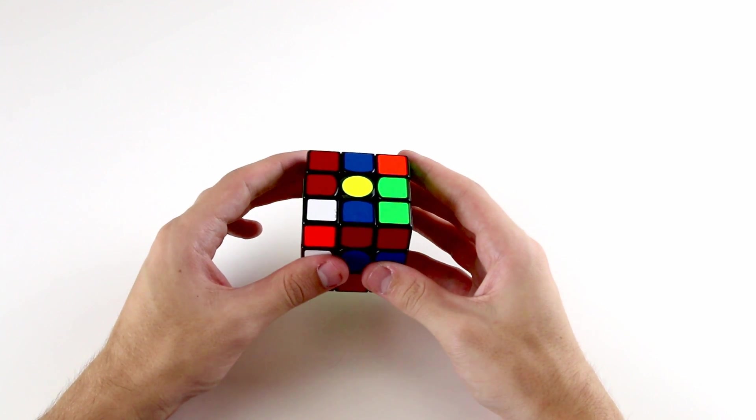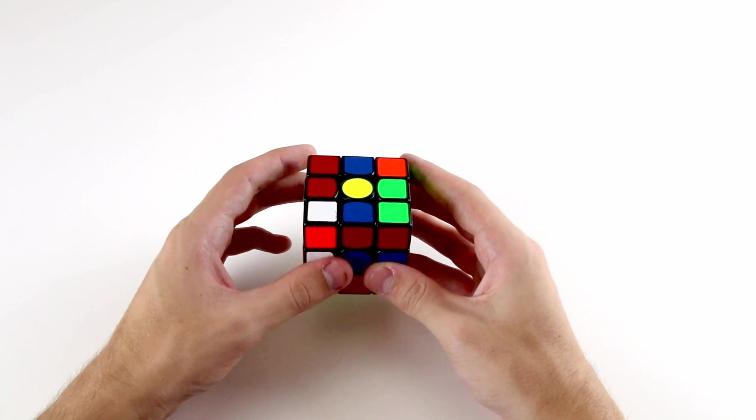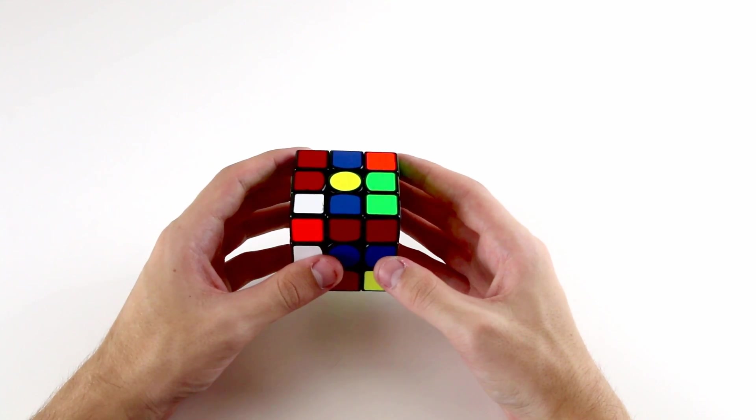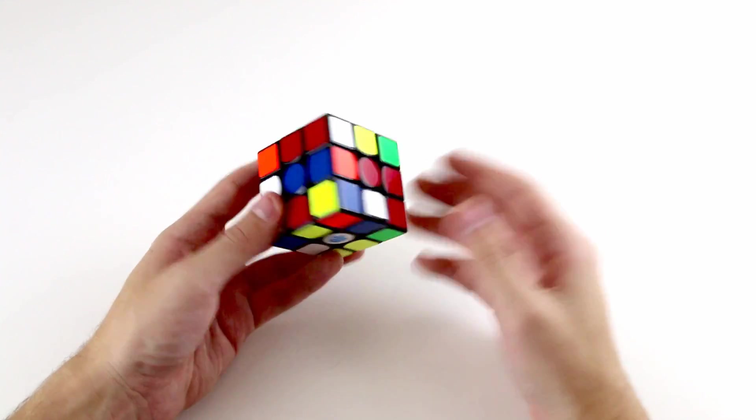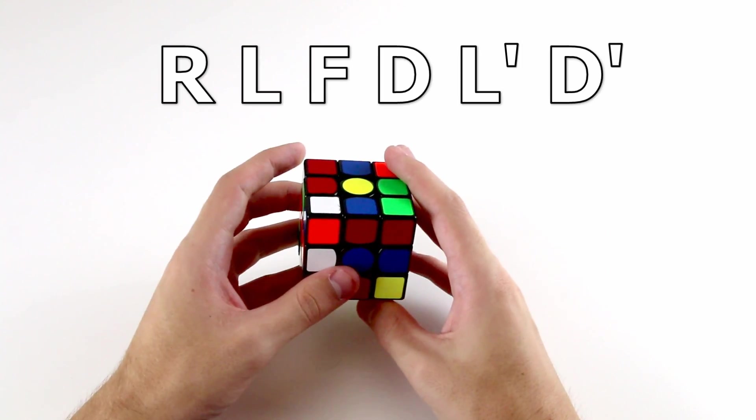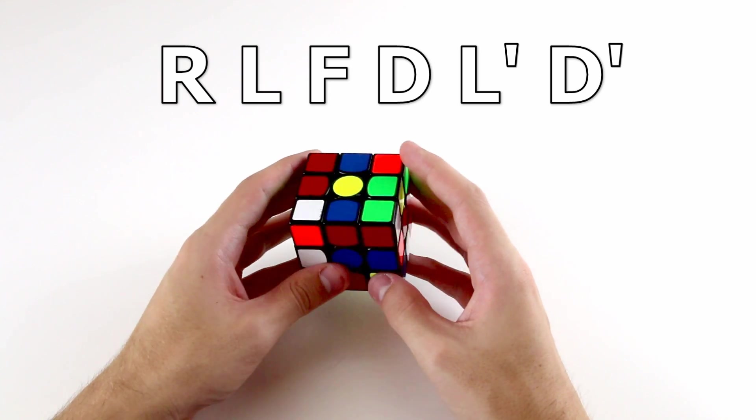If it's too hard for you to visualize where these pieces will move just yet, don't worry—this will improve with practice, but you do need to put a lot of effort into this. So in this example we would solve our cross, these four pieces, by doing R L F D L' D'.